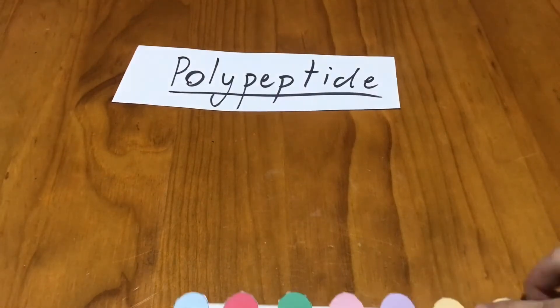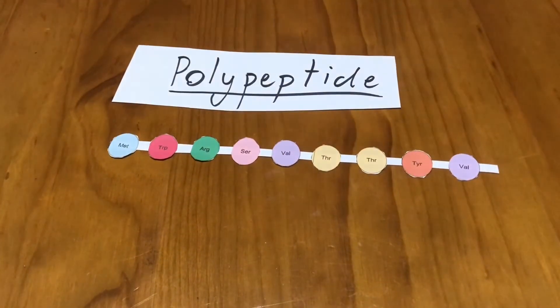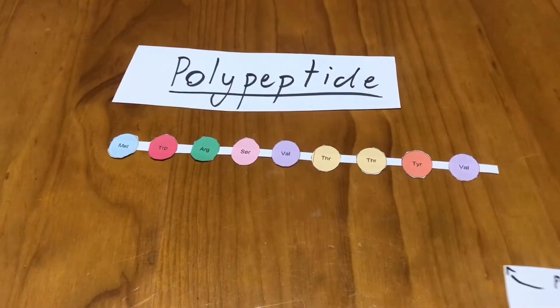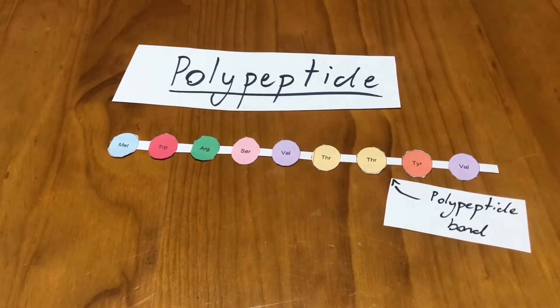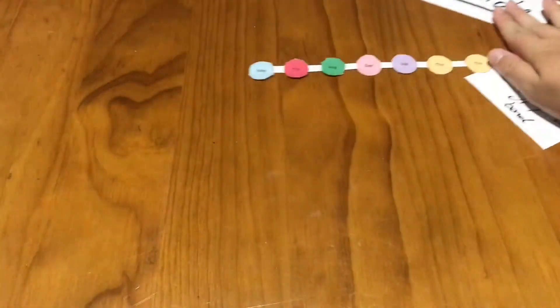A polypeptide is a singular linear chain of amino acids which are linked covalently by peptide bonds. These polypeptide chains go on to make proteins essential for growth, repair, structure function, and the regulation of body's tissues.